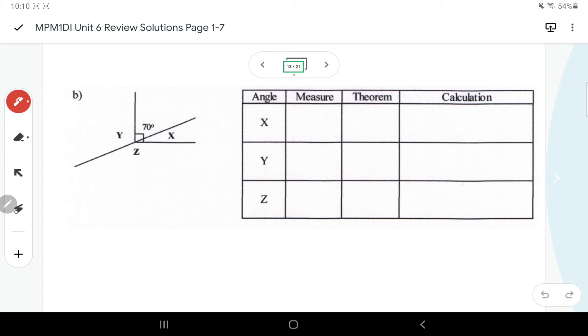A few different things happening here. We see a 70 degrees and an X and they form this right angle. So with that 90 degree angle, I could say that X is complementary, so I would subtract. X is 90 minus 70 degrees, so I get 20 degrees.